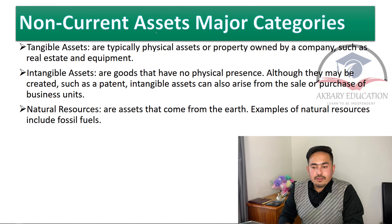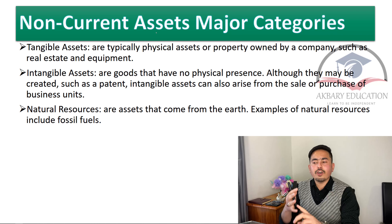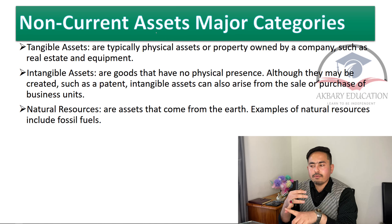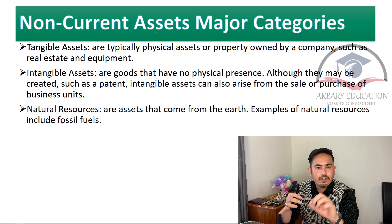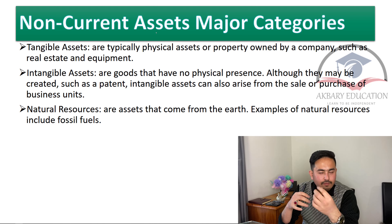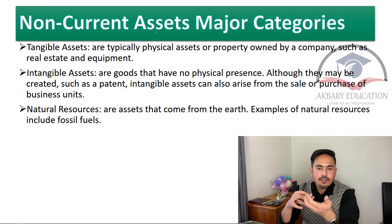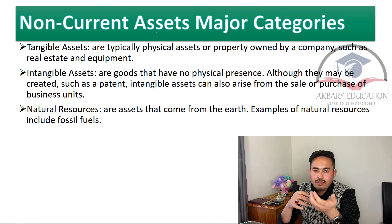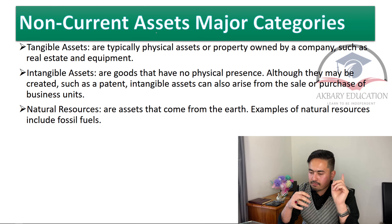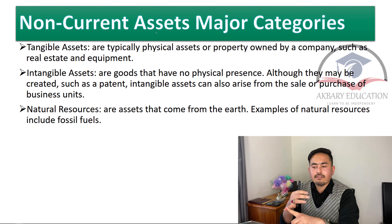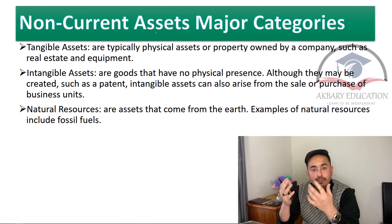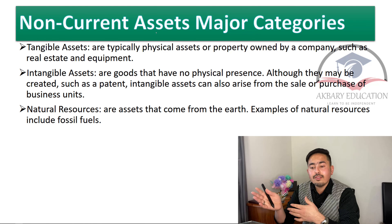Tangible assets are typically physical assets or property owned by a company, such as real estate and equipment. Simply put: if you can touch it and there is a physical presence of that asset, then you will consider it a tangible asset.